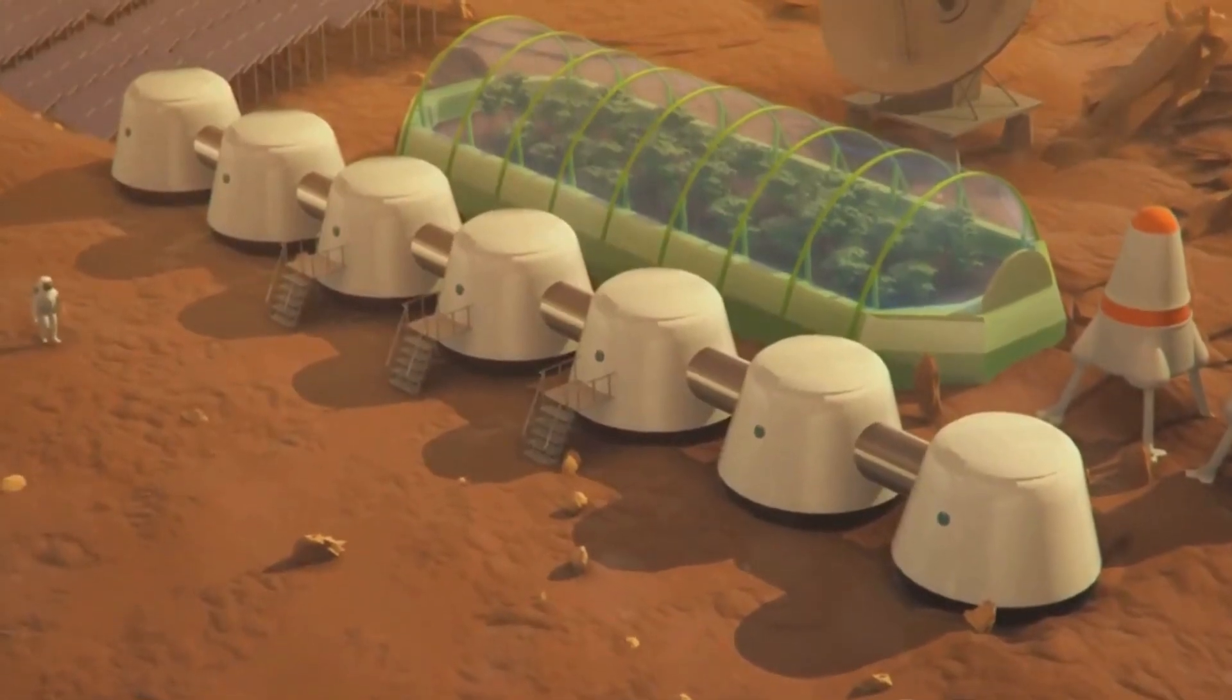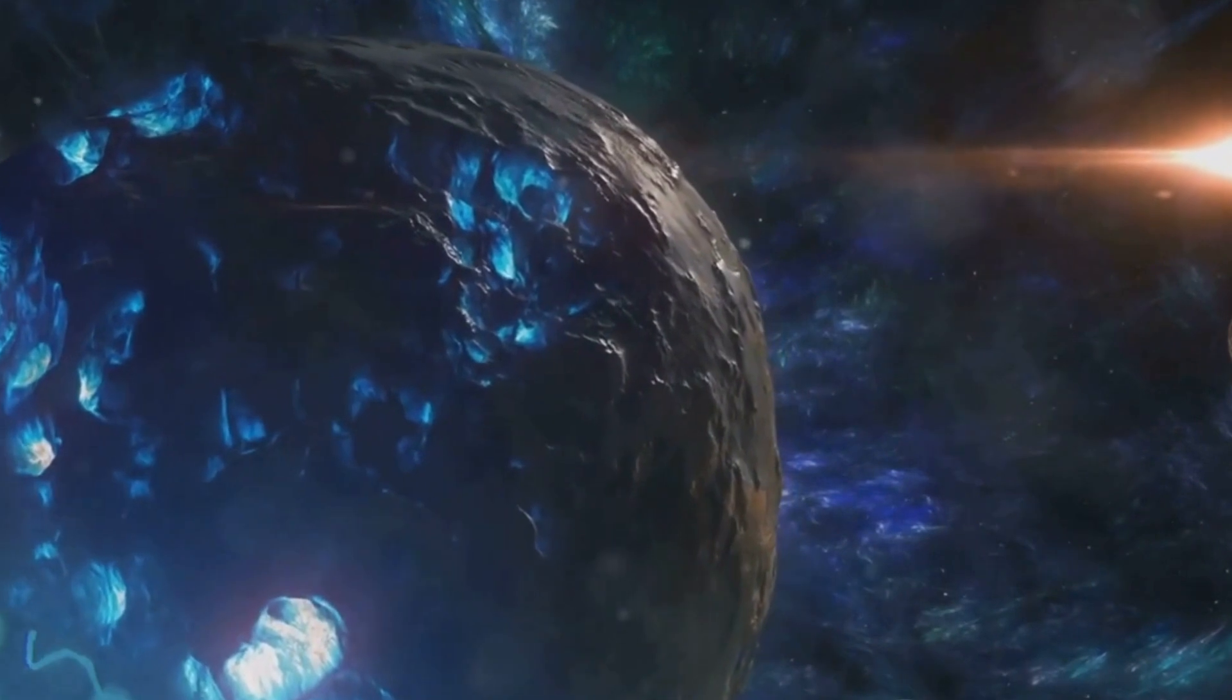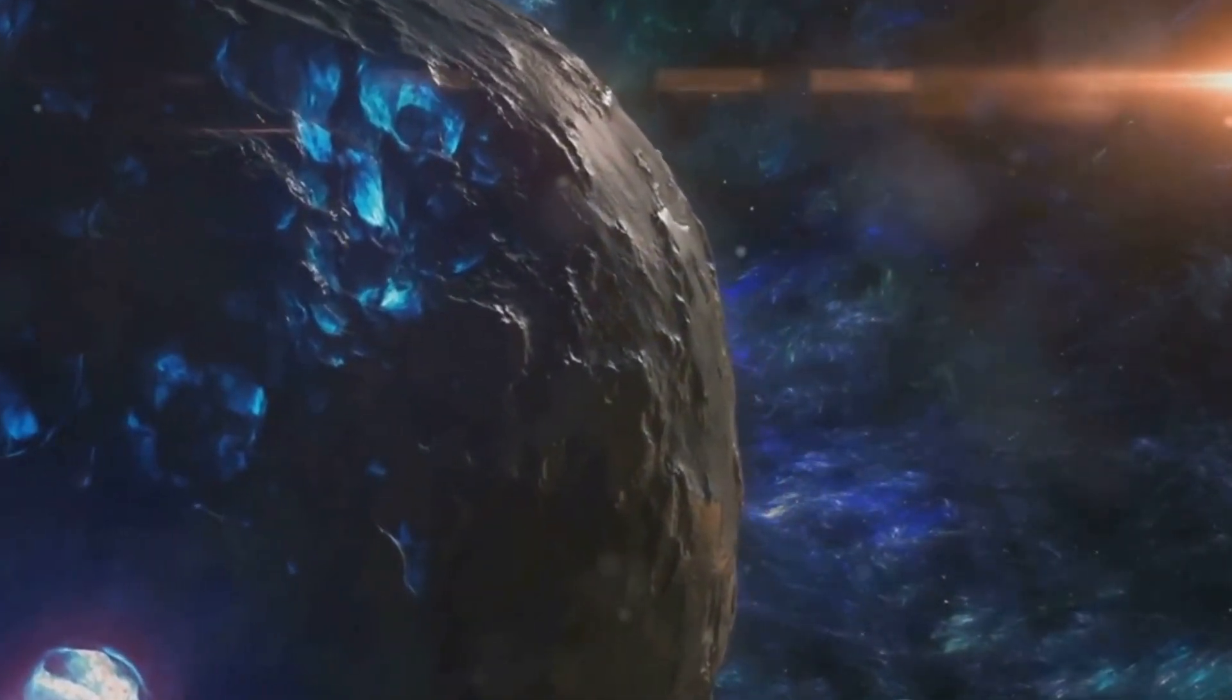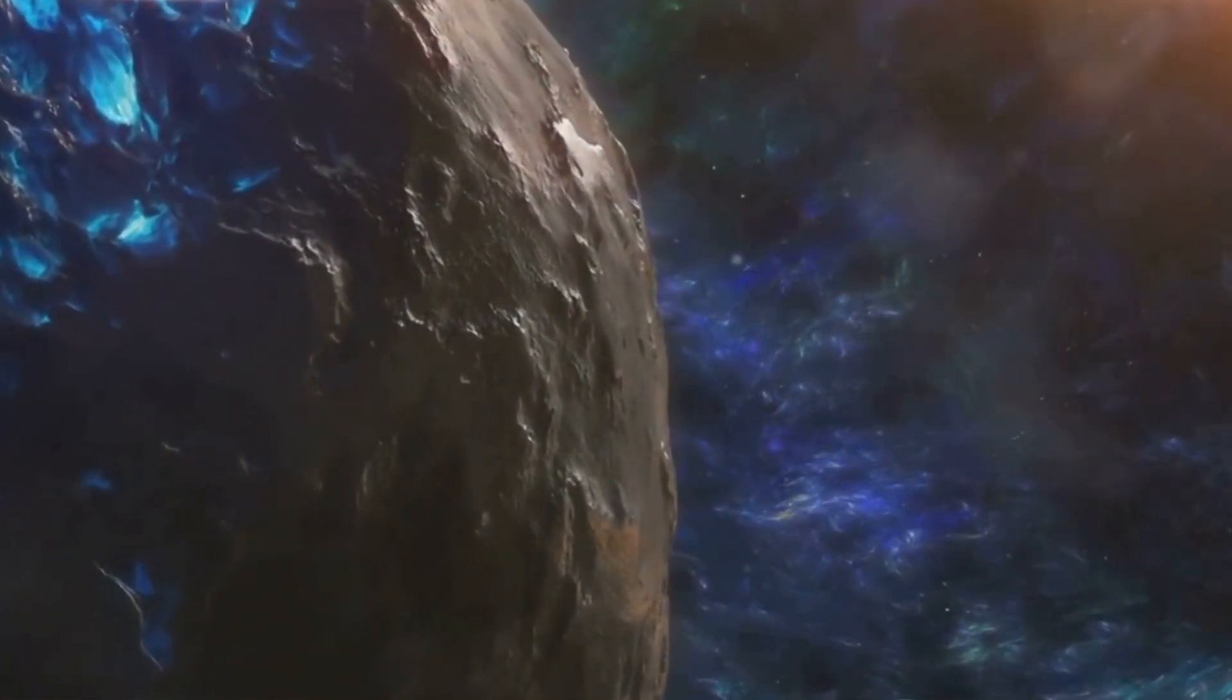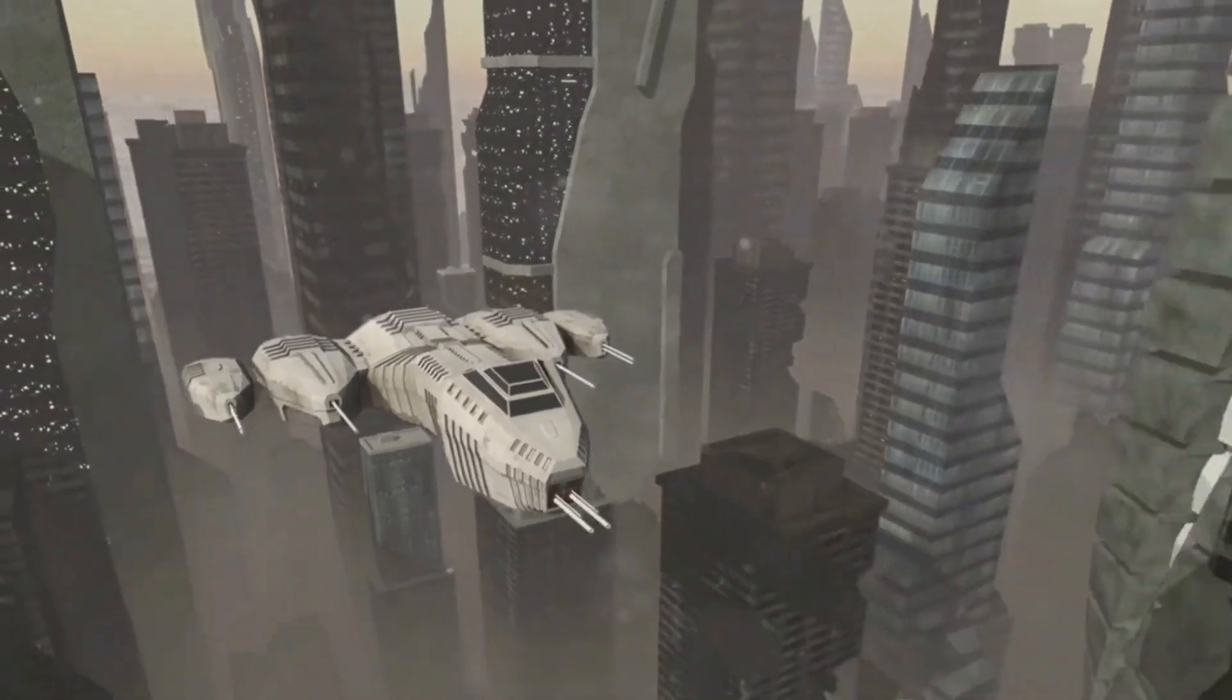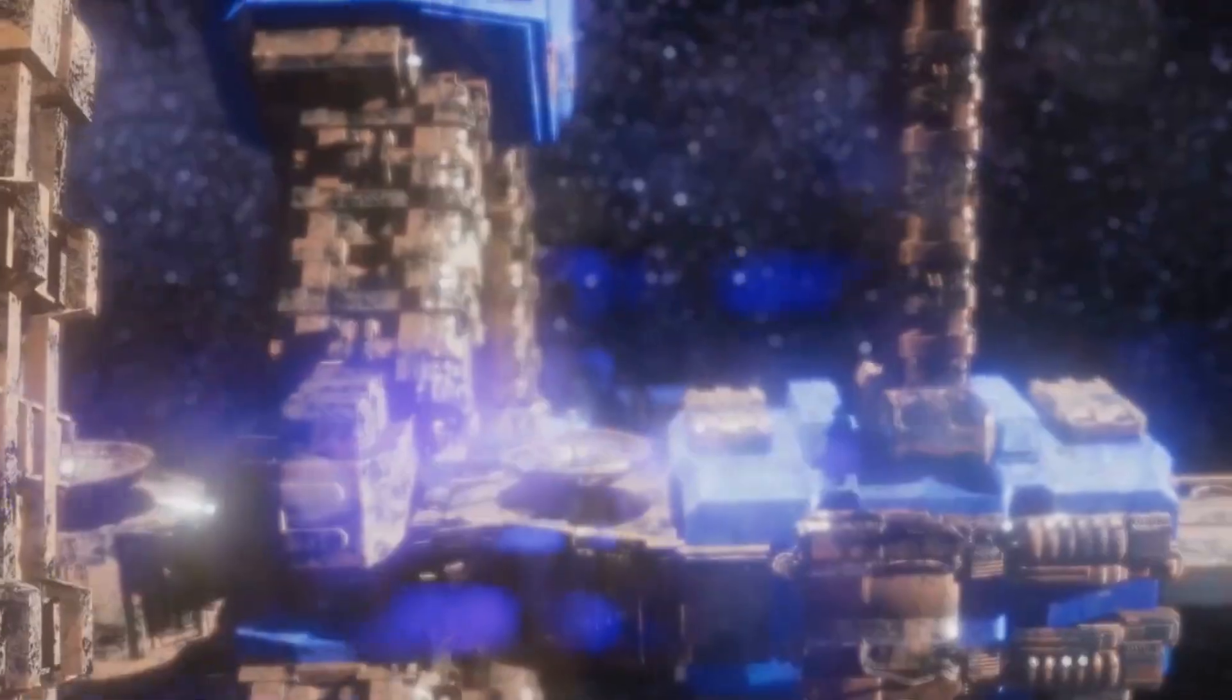At the base of the scale, we find the Type 1 civilization. This is a planetary society capable of harnessing all of the energy available on its home planet. Imagine a world where no gust of wind, no ray of sunlight, and no rush of a river goes untapped, where every iota of energy is captured and put to use, powering cities, fueling transportation, and driving innovation.